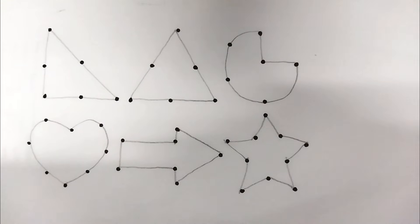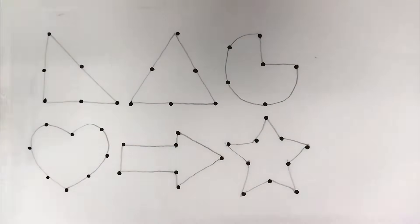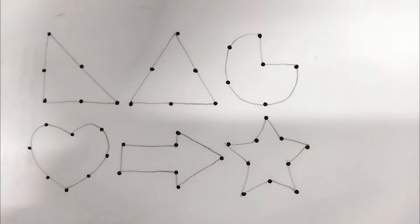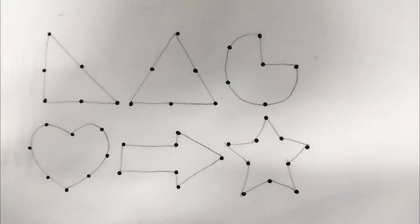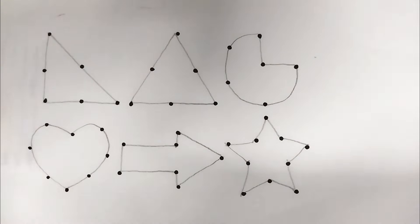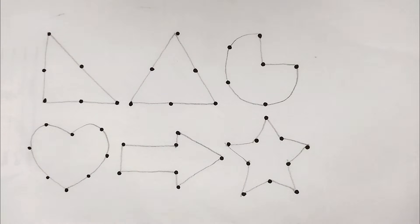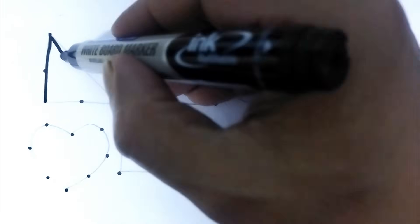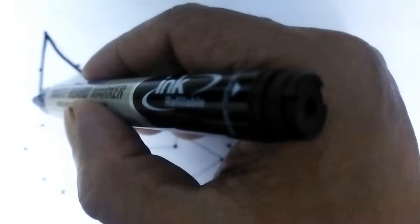Hello kids, how are you today? We will learn different types of shapes and different types of colors. I am adding the dotted lines and creating the shapes. This is a right triangle. What is this? This is a right triangle. Star.